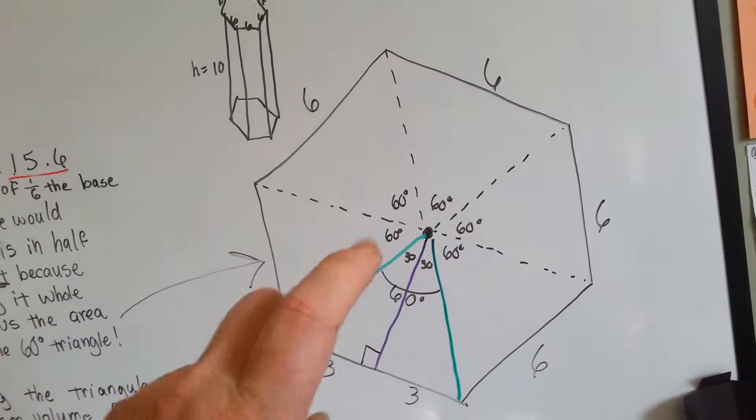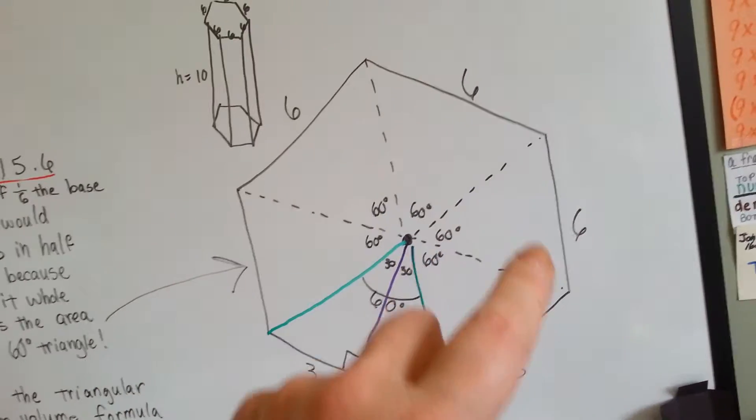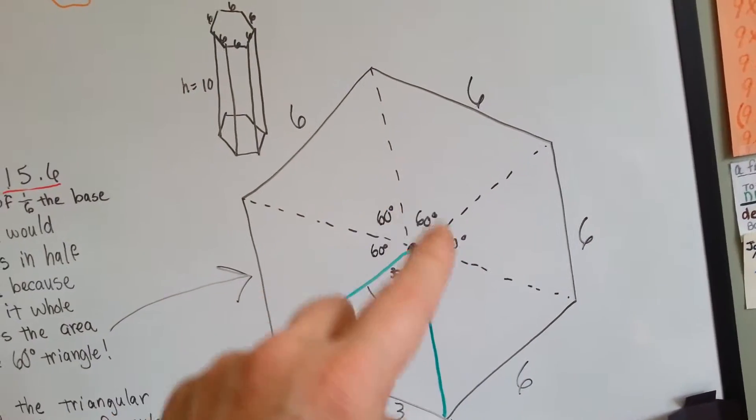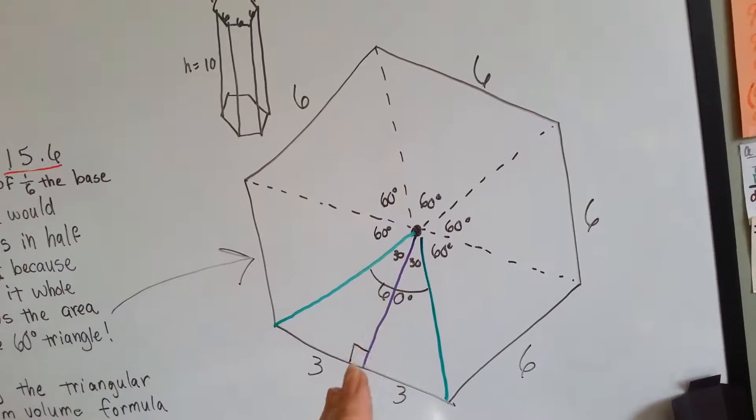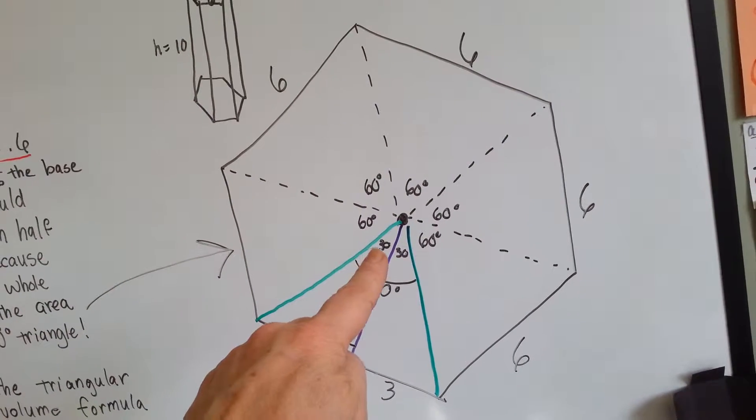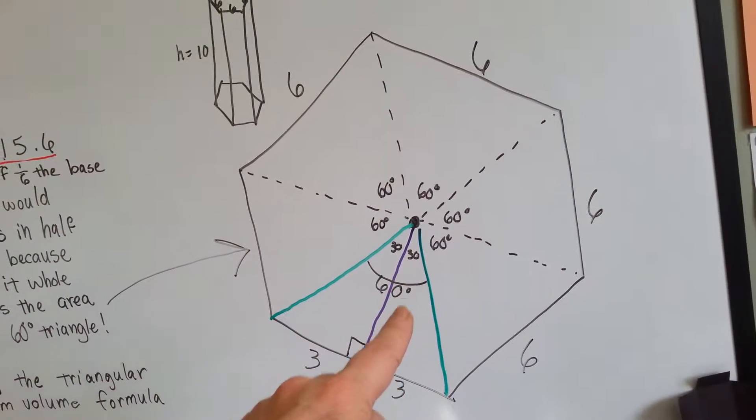I turned this hexagon into six triangles that all have 60 degrees here, right? But this one I cut in half with the apothem. And because I did that, it created a 30 degree angle and a 30 degree angle. And do you know what you see?